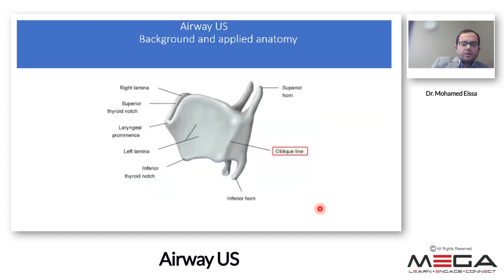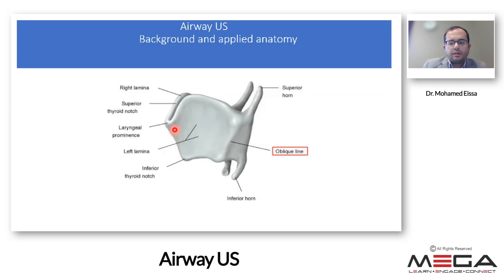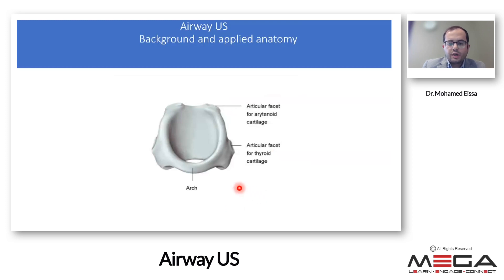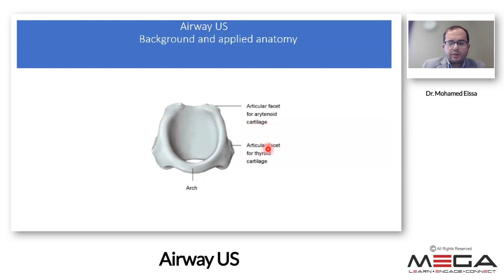The thyroid cartilage has two big laminae, as you can see here, which meet in the midline and form a prominent angle called the laryngeal prominence or Adam's apple, as well as the superior thyroid notch — very important for ultrasound scanning. Below it is the cricoid cartilage, which has a narrow anterior arch and a broad posterior lamina with articular facets to articulate with the thyroid cartilage and the base of the arytenoid cartilage.